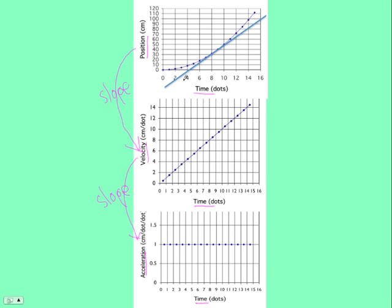One way of coming up with that is looking at the units. Slope is the y divided by the x, centimeters over dots, centimeters over dots. Centimeters over dots divided by dots gives you centimeter per dot per dot or centimeter per dot squared. And so the units are a clue that it's the slope.